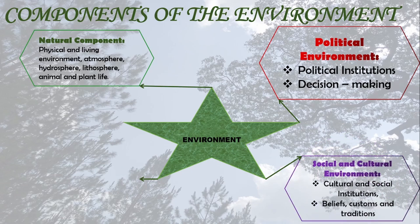Then the other component is the social and cultural environment. Here we are looking at cultural and social institutions. We talk about beliefs, traditions, and customs found in different communities. Some specific things include language and religion — for example, Christianity, Islam, Hinduism, and African religion. We can also talk about customs; for example, in some areas bananas are their staple food, in some areas nshima is their staple food.